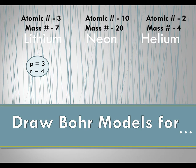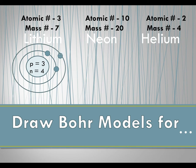Here's our nucleus — the nucleus is always that inner circle. On that first energy level we can have up to two electrons. We have three electrons total, so only two of them can go on that first energy level. These electrons can go anywhere on that circle. We have three total, so that means we have one more to go on the next circle.